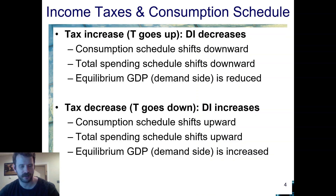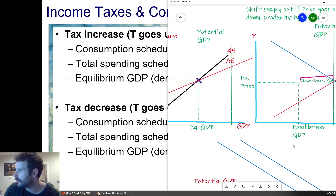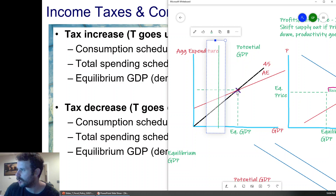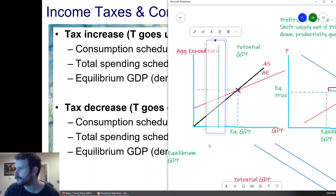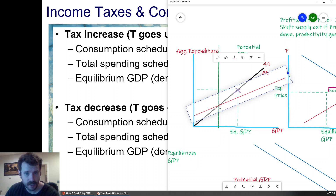Let's just focus on demand for now; we'll go to supply side later, probably on Monday. If we're in an inflationary gap, we can increase taxes, decrease disposable income, and shift down aggregate expenditure. So if we're in an inflationary gap — potential GDP is below equilibrium GDP — we could increase taxes, which is going to lead to a decrease in disposable income, which is going to lead to a decrease in consumption, and drop the equilibrium GDP.